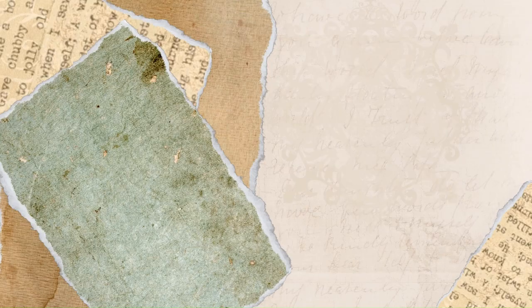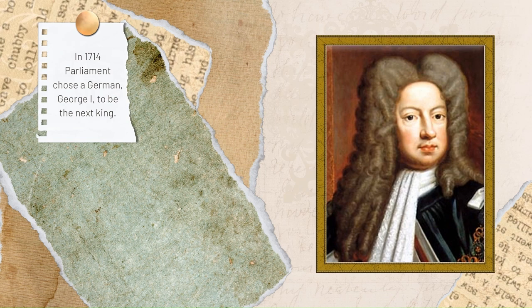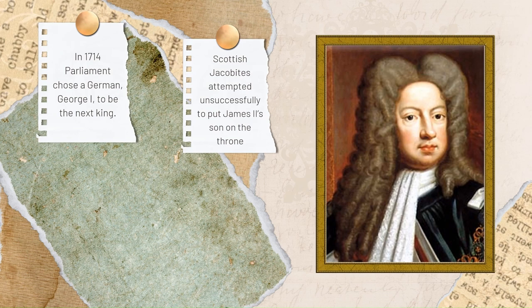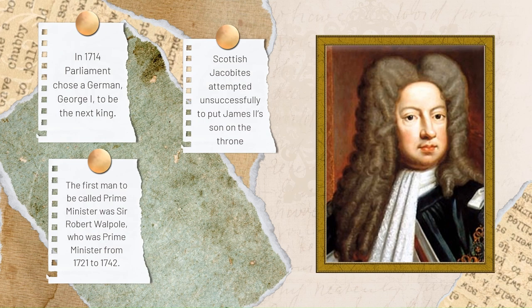The Prime Minister. When Queen Anne died in 1714, Parliament chose a German, George I, to be the next king, because he was Anne's nearest Protestant relative. An attempt by Scottish Jacobites to put James II's son on the throne instead was quickly defeated. George I did not speak very good English and this increased his need to rely on his ministers. The most important minister in Parliament became known as the Prime Minister. The first man to be called this was Sir Robert Walpole, who was Prime Minister from 1721 to 1742.